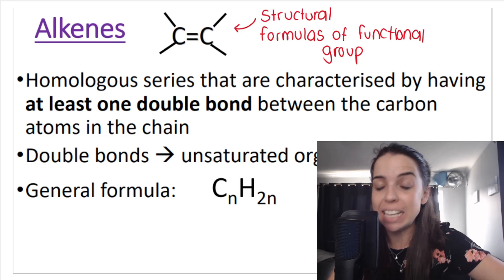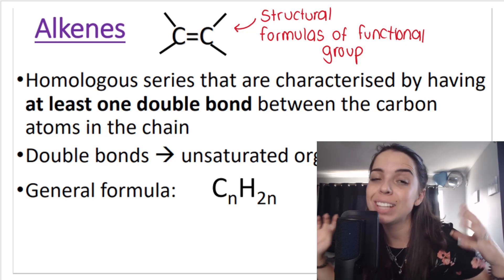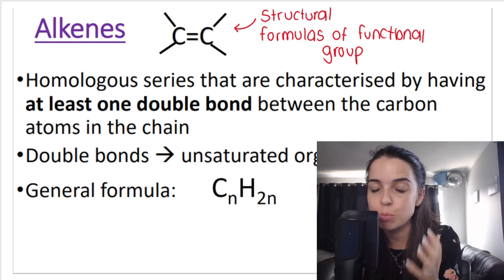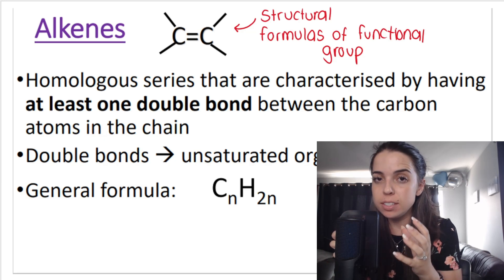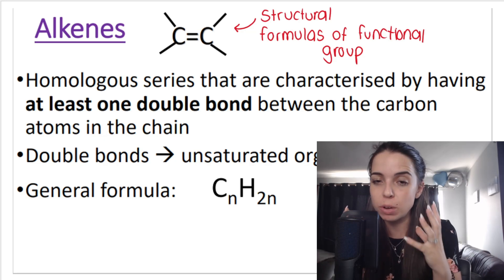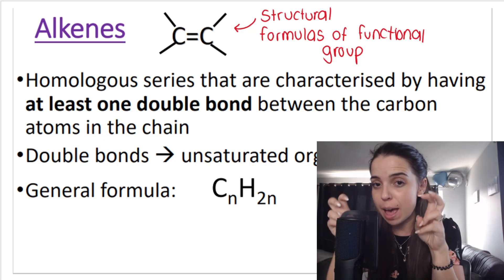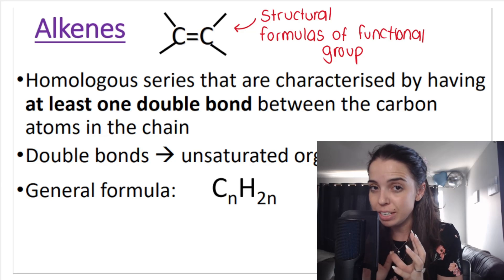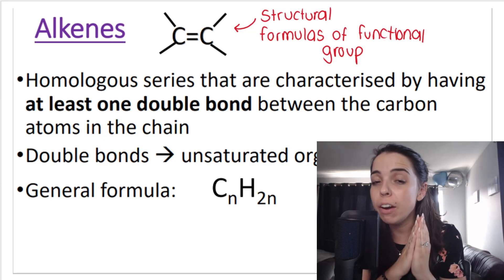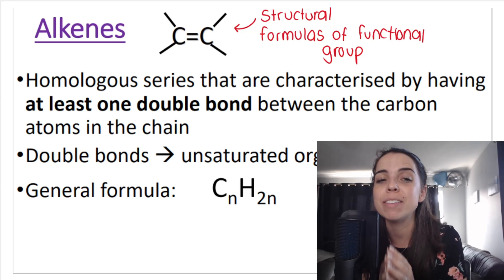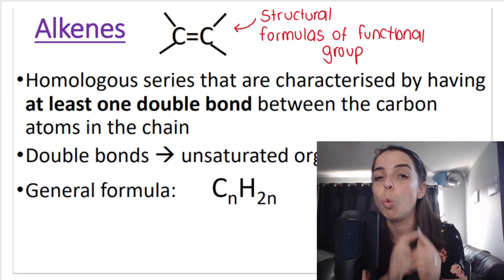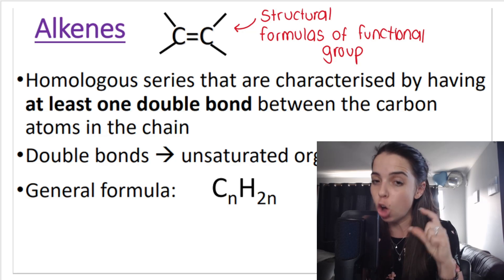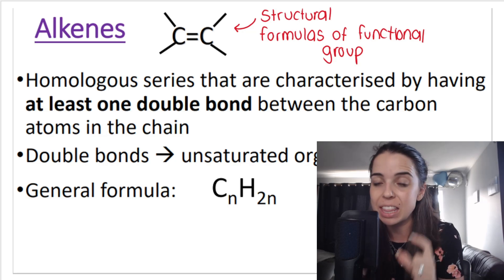In this video, we'll be looking at alkenes. Alkenes are a homologous series — a group of organic compounds, a family, if you will. Alkenes are characterized by having at least one double bond between carbon atoms in the chain.